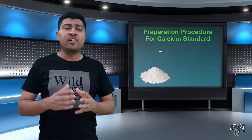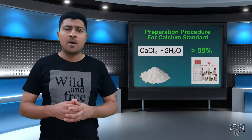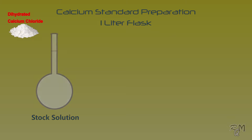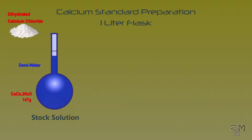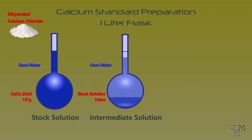I will describe the preparation procedure of the standard solution of calcium. For this purpose we need dehydrated calcium chloride greater than 99%. I am using dehydrated calcium chloride manufactured by Sigma, but you can choose any manufacturer as per availability. First we will prepare stock solution: take a graduated flask of 1 liter, pour 147 grams of dehydrated calcium chloride in the flask, then dissolve and fill up to 1 liter with demineralized water. In the second step, prepare intermediate solution from stock solution: take a graduated flask of 1 liter, pour 100 ml of stock solution, then fill up to 1 liter with demineralized water.